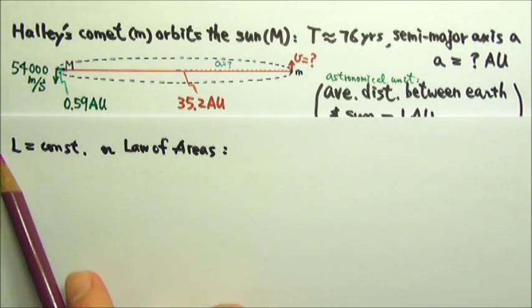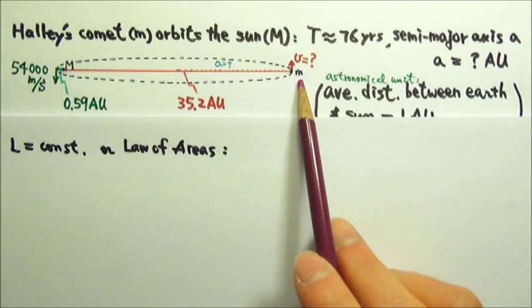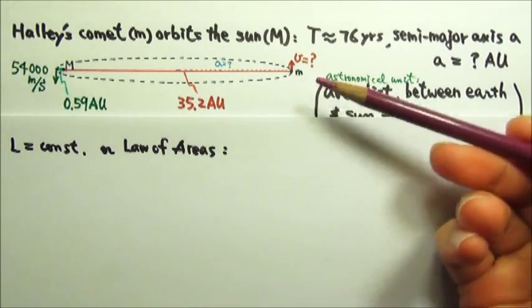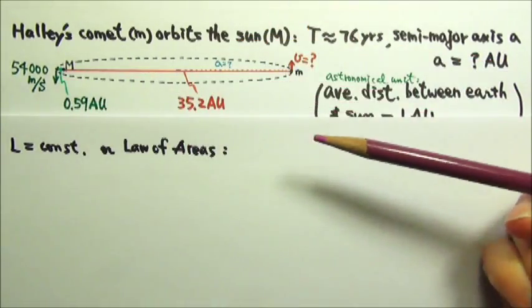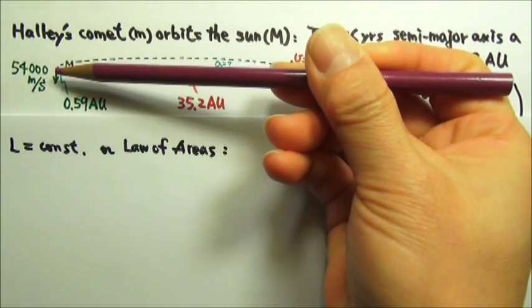Angular momentum is conserved if the net torque is zero. For the comet, the gravitational force by the Sun on the comet is a central force. By that I mean the gravitational force goes towards the center of the Sun.